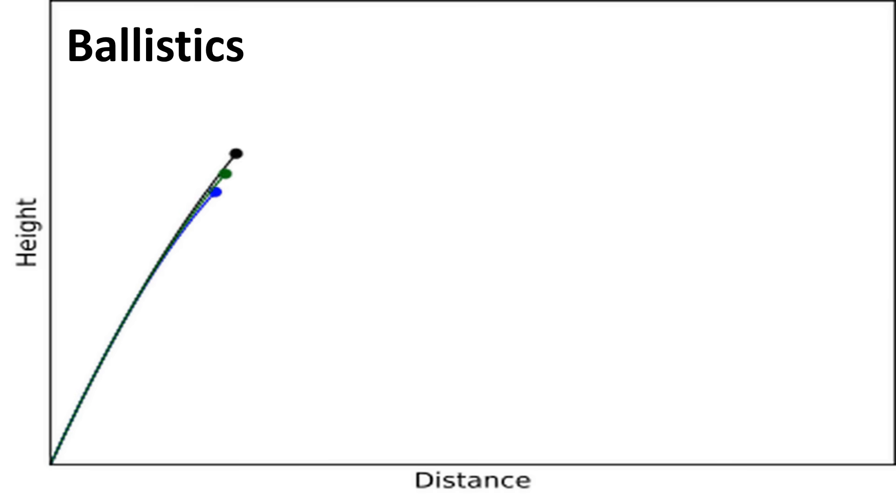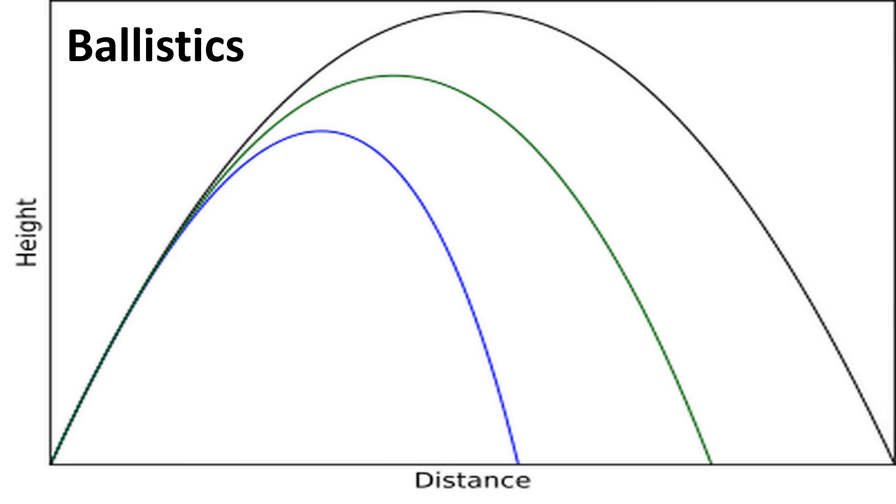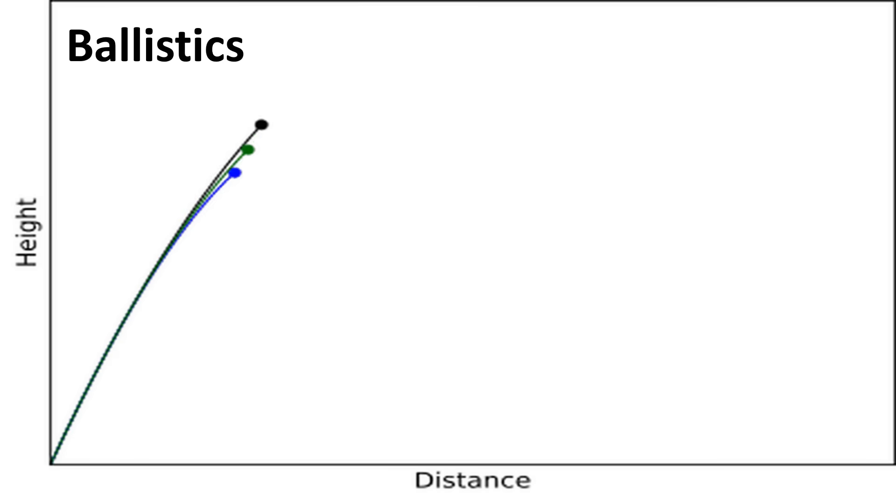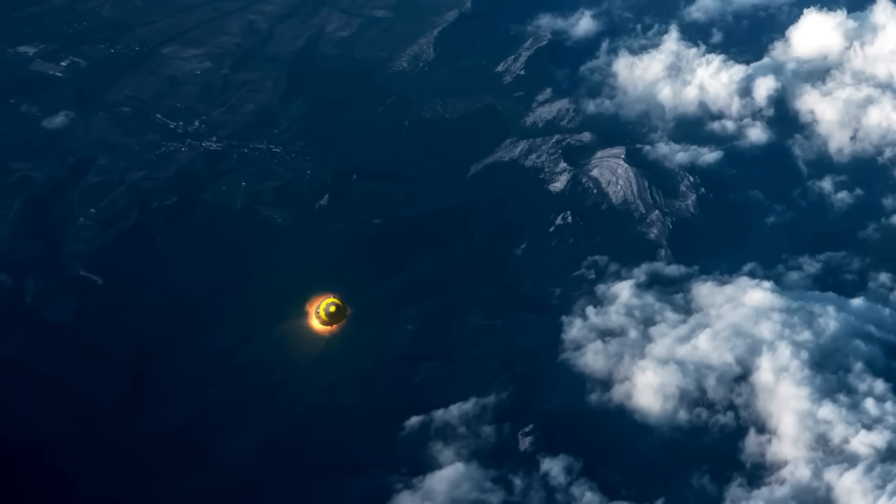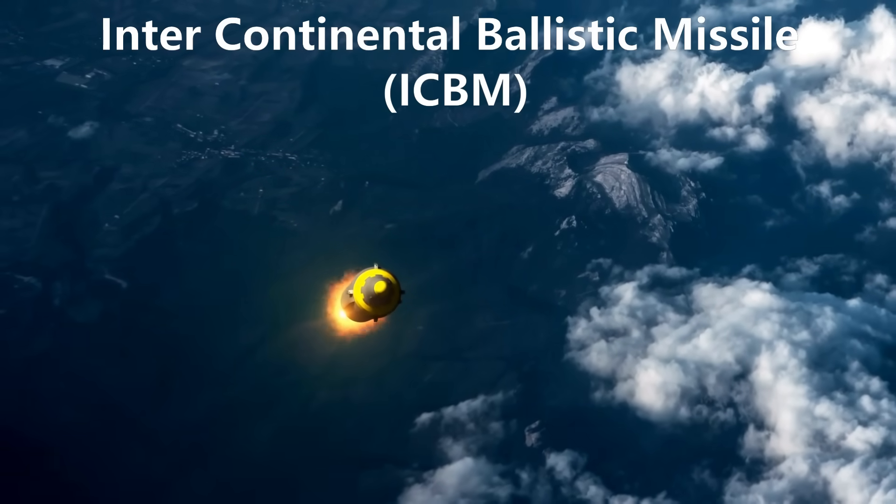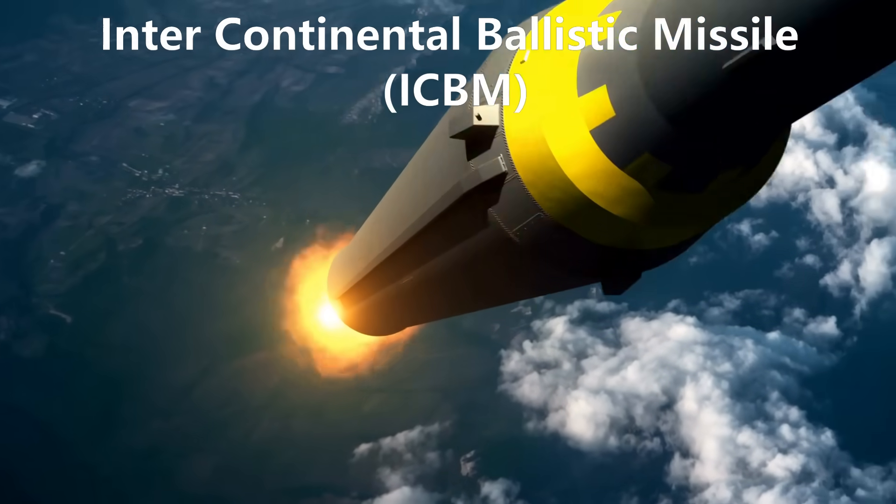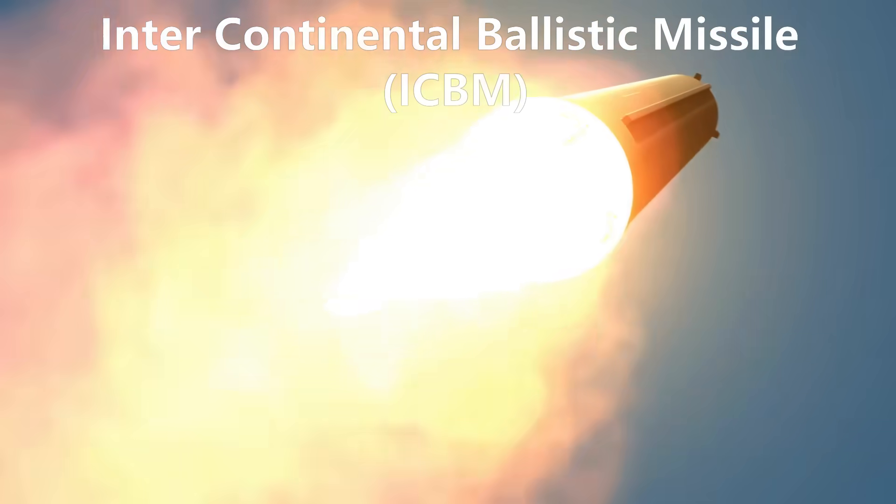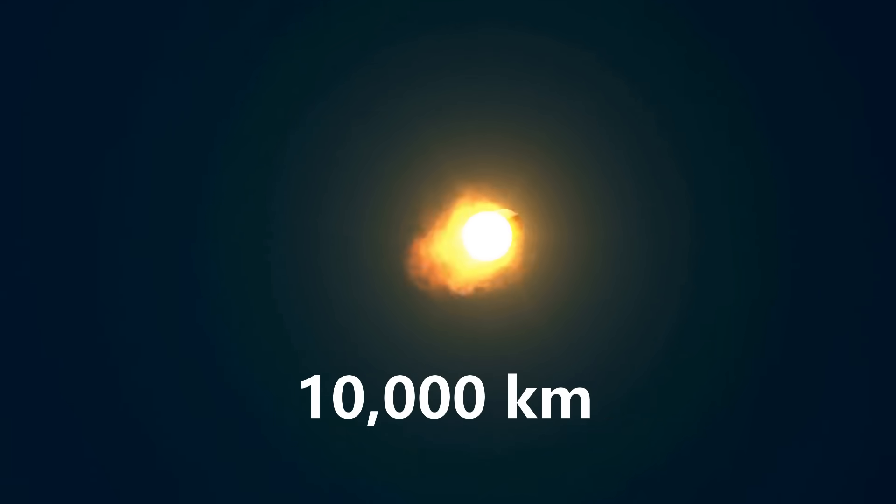As the range of a missile increases, the dimensions and speeds of its trajectory change. However, the overall parabolic shape remains roughly the same. The ballistic missiles that travel the longest distances are known as intercontinental ballistic missiles, or ICBMs. These missiles have ranges of up to 10,000 kilometers.